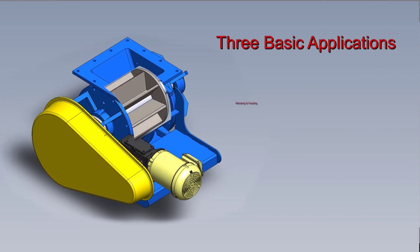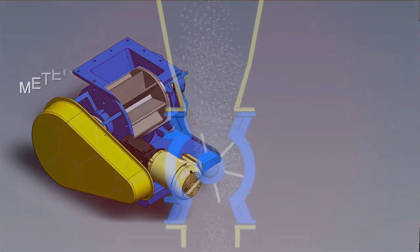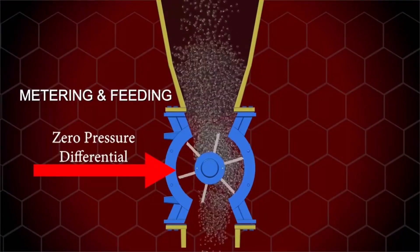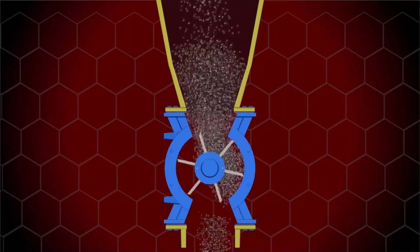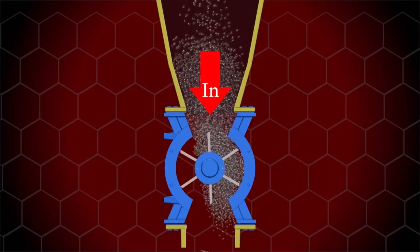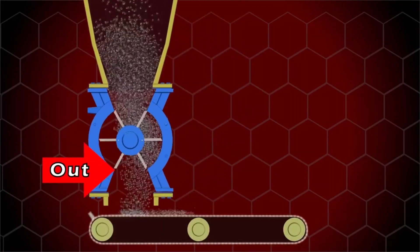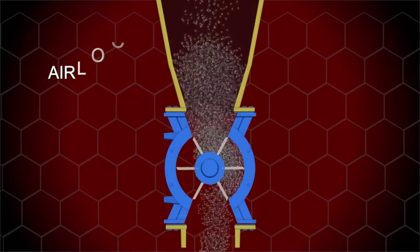Metering and feeding, airlock, and airlock feeder. Metering feeding is where the valve is not responsible for air pressure sealing, but only metering material at a set fixed rate. As the veins rotate, material enters through the top into the pockets and then exits through the bottom outlet to a bin, conveyor, or other device.